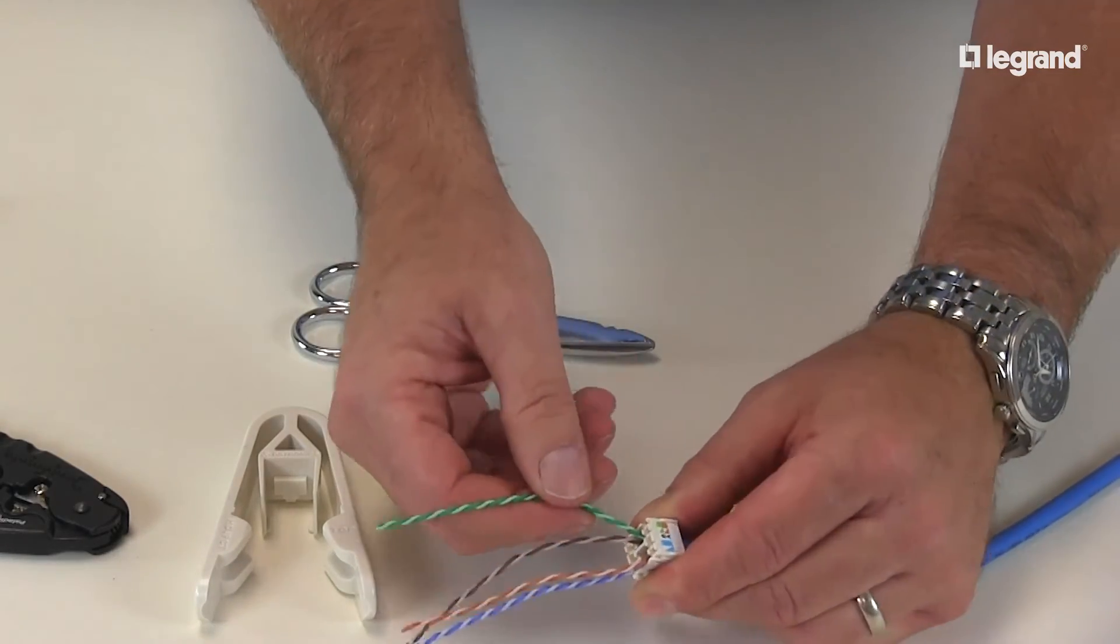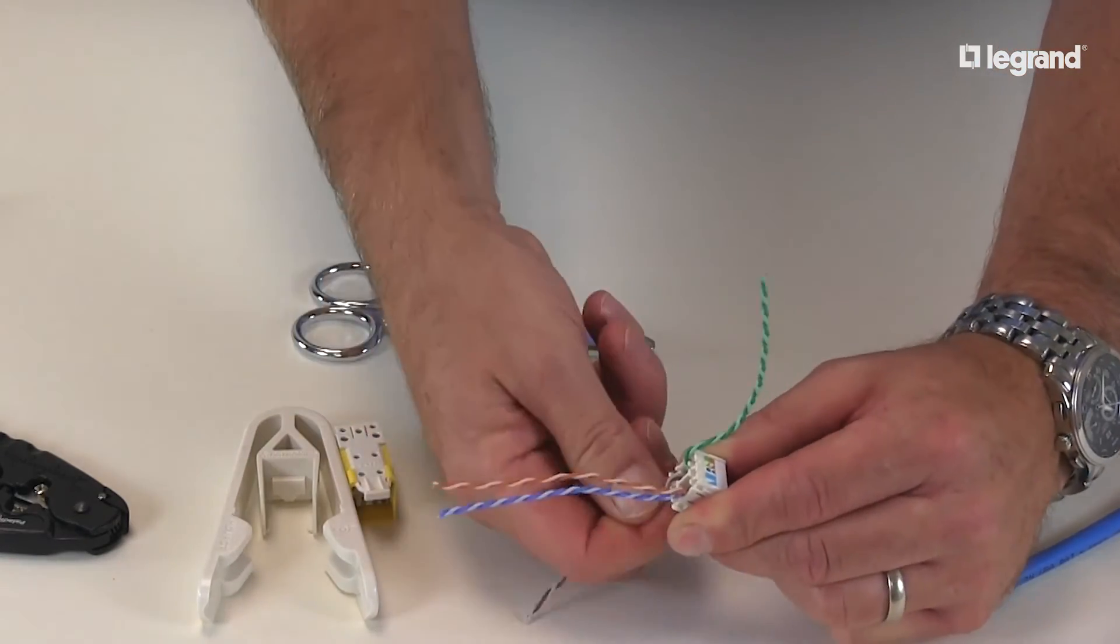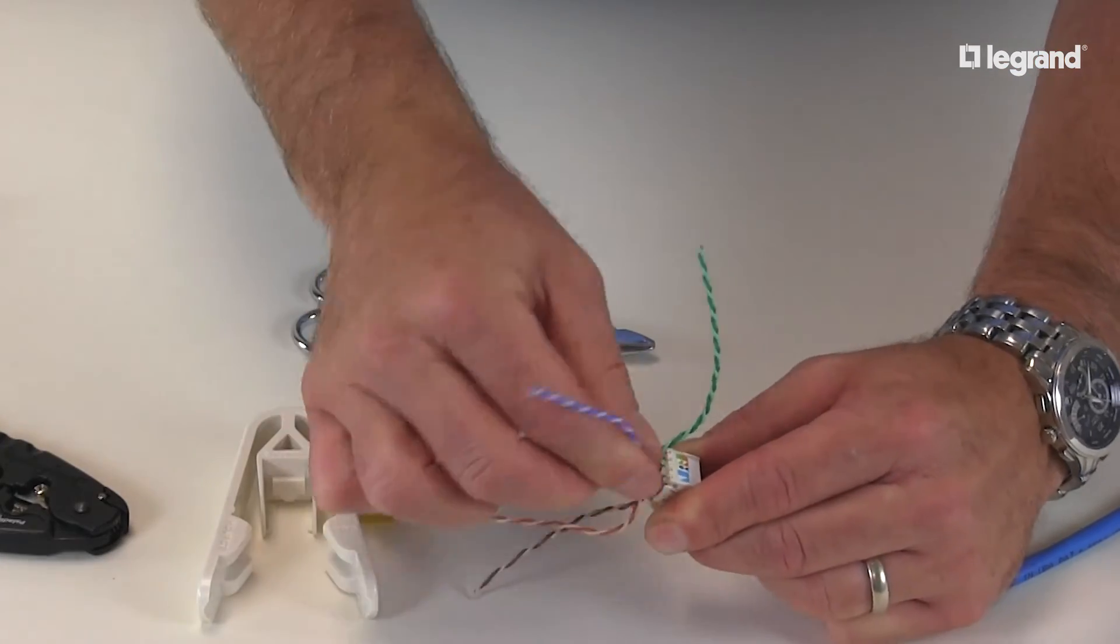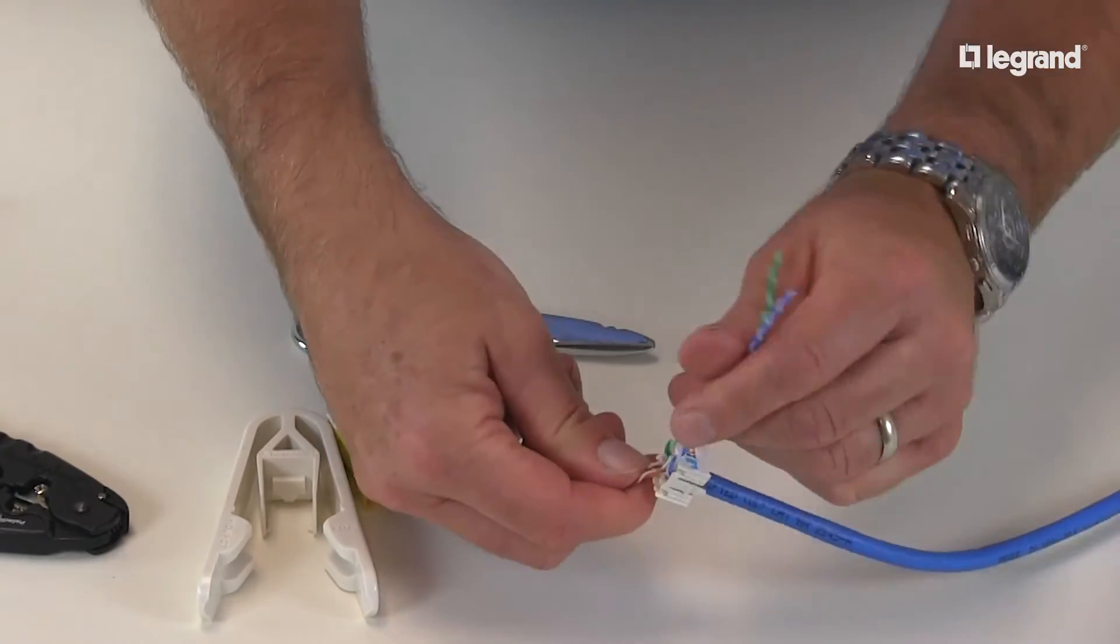TIA defines two different wiring configurations, T568A and T568B. Here we're going to use the T568B method.